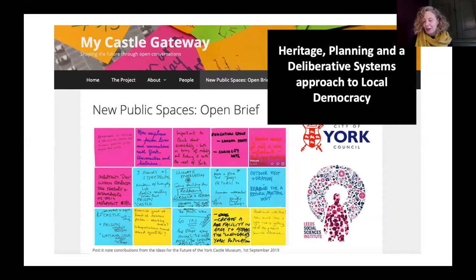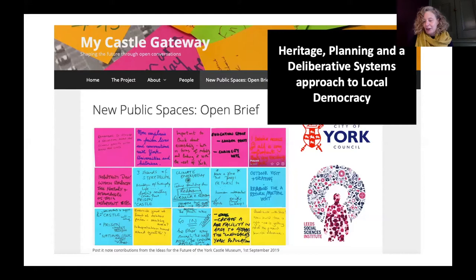In the design of our public engagement, we broadly seek to link three main approaches: firstly, the creative expression of what people feel is important, using community heritage approaches; secondly, the exploration and deliberation of complex issues; and thirdly, seeing changes happening at all scales — whether through large-scale planning interventions or through community action of different sorts.